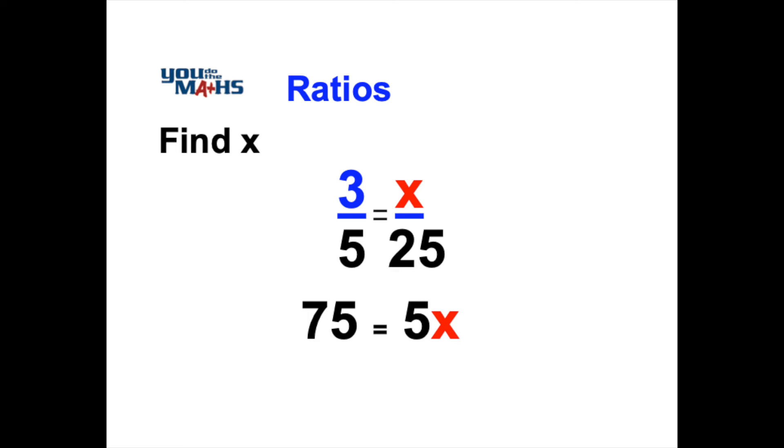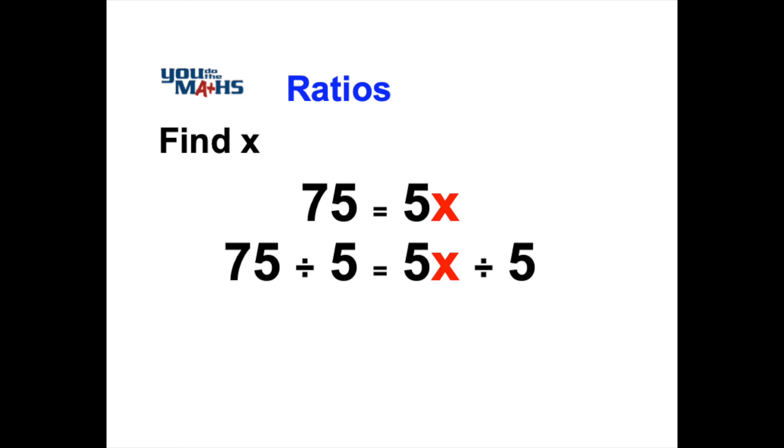Now because the 5 and x are being multiplied, to remove the 5 we divide this by 5 and we do the same to the left hand side to keep the equations balanced.